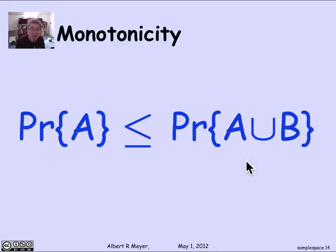The closely related phenomenon is basically the probability that A or B happens is greater than or equal to the probability that A happens.